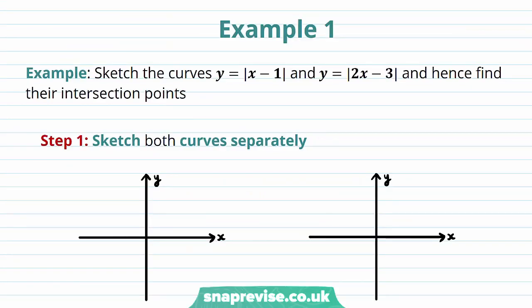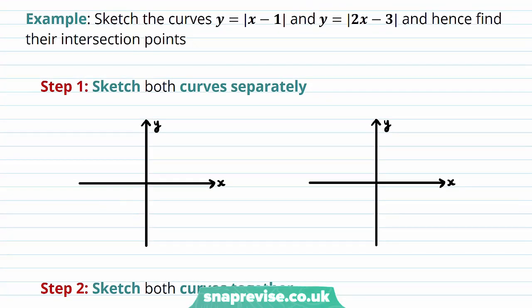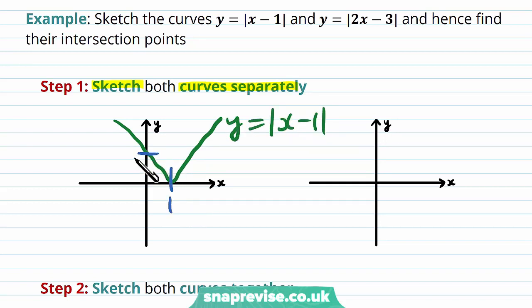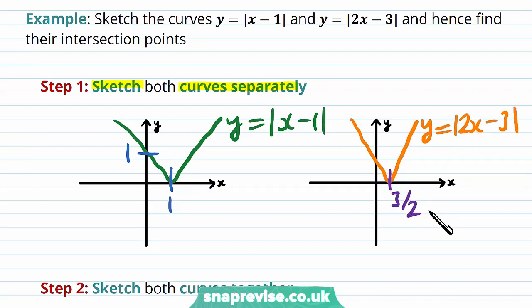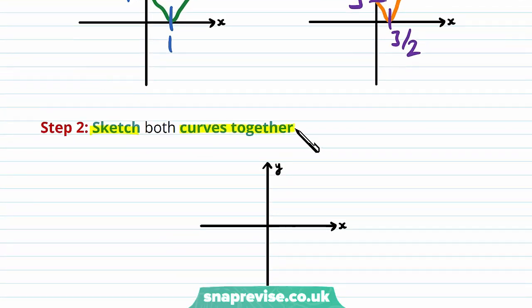Let's take a look at some examples. Our first example asks us to sketch the curves y equals the modulus of x minus 1 and y equals the modulus of 2x minus 3, and hence find their intersection points. The first step is to sketch both curves separately. The first one, y equals the modulus of x minus 1, has an x intercept at 1 and a y intercept at 1. The second curve, the modulus of 2x minus 3, has an x intercept at 3 over 2 and a y intercept at 3. The second step is to sketch both curves together — the modulus of x minus 1 is less sloped than the modulus of 2x minus 3.